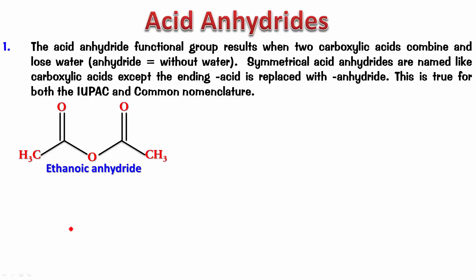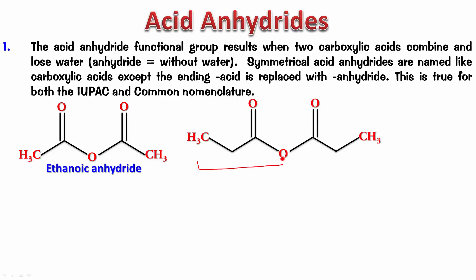Try figuring out the name of this next one. You will notice it is also symmetrical. Counting the carbons: 1, 2, and 3 — there are three carbons, so this corresponds to propanoic acid. Therefore this is propanoic anhydride.